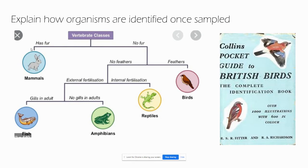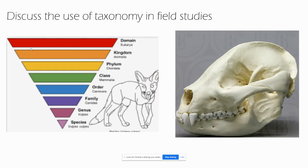When classifying organisms, we can use either taxonomy or phylogenetics. Taxonomy involves the identification and naming of organisms and their classification into groups based on shared characteristics, such as their morphology, their dentition — what teeth they have — their reproduction, whether or not they have hair, and things like this.